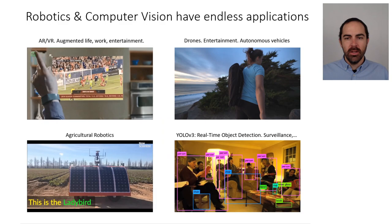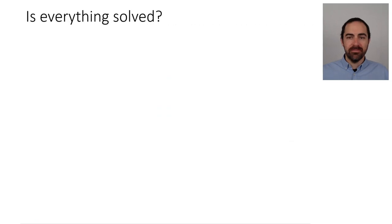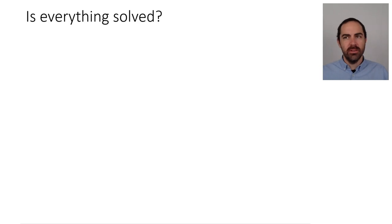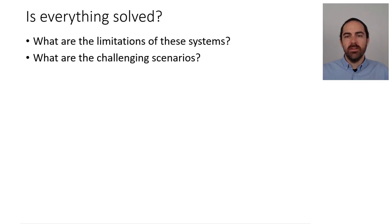Given this sample of the state of the art in robotics and computer vision, can we say everything is solved? Well, fortunately not yet, because that gives us more time to do research and think about interesting problems. So what are the limitations of these systems? We've seen that they work quite well in bright light, with uniform illumination conditions, when things are not moving too fast. There is still room for improvement in different difficult scenarios.